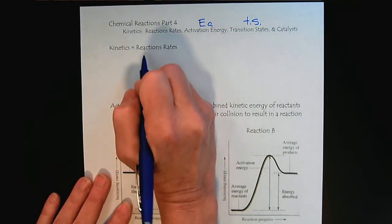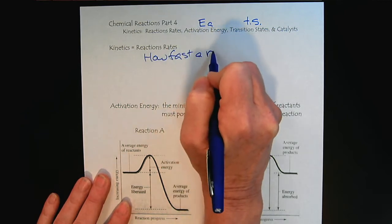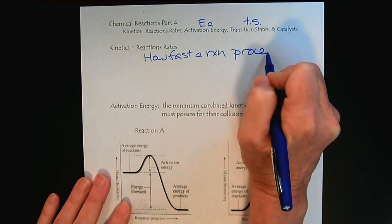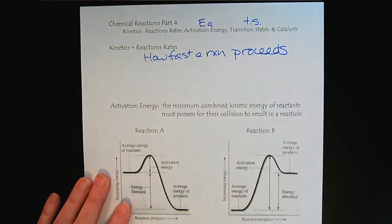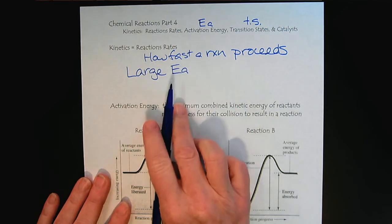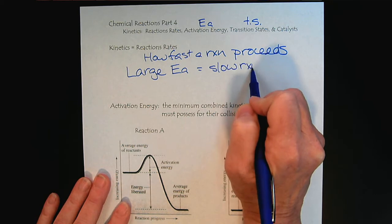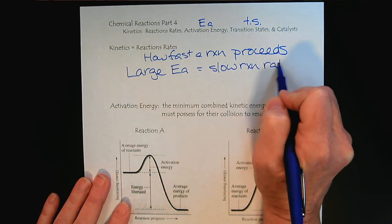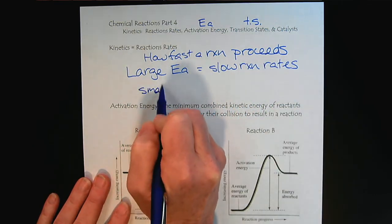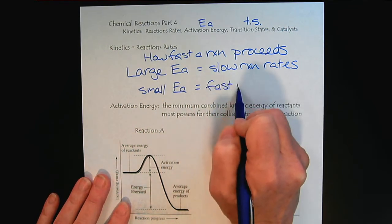Reaction rates are all about how fast a reaction proceeds. When we studied thermodynamics, we could say whether or not a reaction was favored, but we didn't know how quickly that would happen. If we have a large activation energy, we will have slow reaction rates, and if we have small activation energies, we get fast reaction rates.